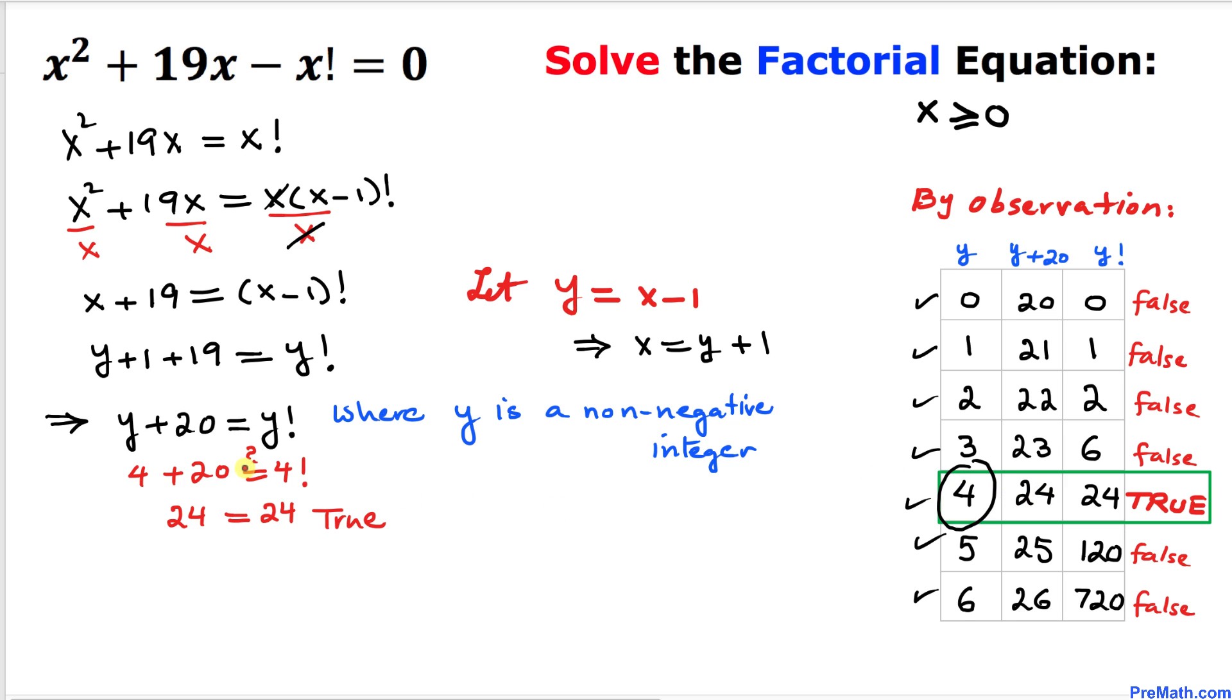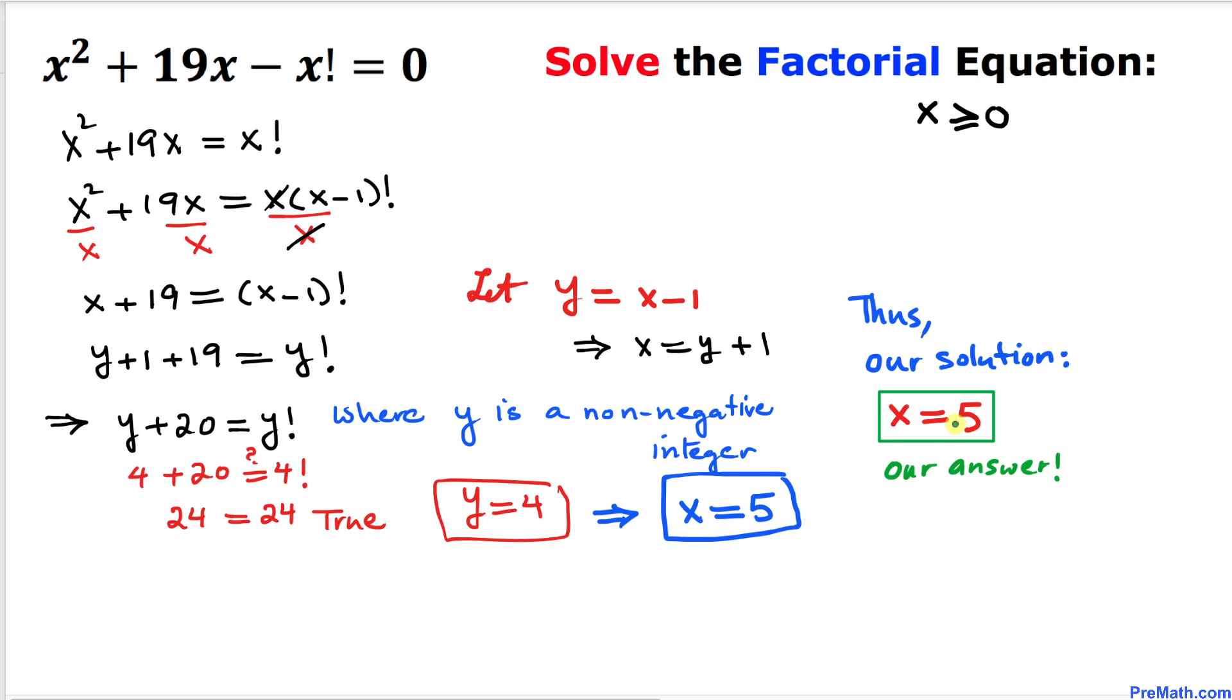So our only valid value is y = 4. But we know that y = x - 1, so therefore our x value is 5. That is our solution. Thus, x = 5 is our final answer.